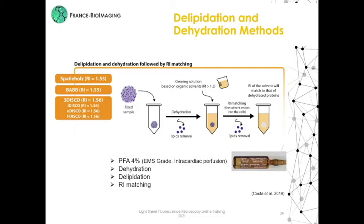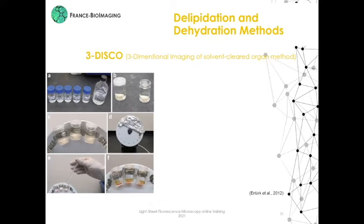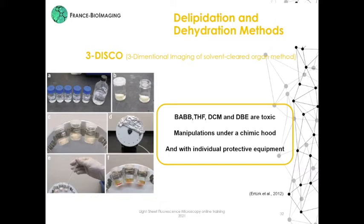In the 3D-scope protocol, for the dehydration step we commonly use tetrahydrofuran series at different percentages, dichloromethane for the delipidation step, and dibenzyl ether for the RI matching. Time incubations are adapted according to the sample size. All the steps of this protocol have to be done on a roller to always shake the sample and allow homogenous penetration of the solvent. All these solvents are toxic, so we have to manipulate under the chemical hood with the right protective equipment.